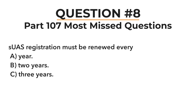Question eight is another registration question: SUAS registration must be renewed every year, every two years, or every three years? Everyone has been answering two years — incorrect. It's similar to the mailing address question: you have different timeframes for your pilot certificate versus your drone registration. You have 24 calendar months to renew your pilot certificate, but your drone registration doesn't need to be renewed for three years. Carefully read the question — registration is renewed every three years.